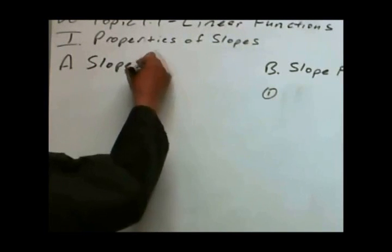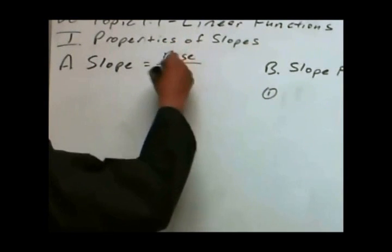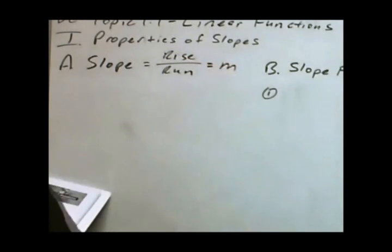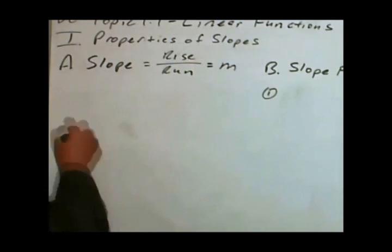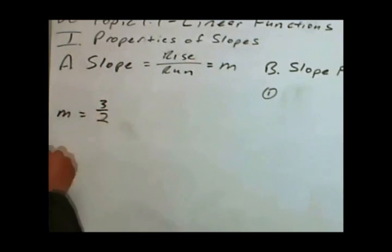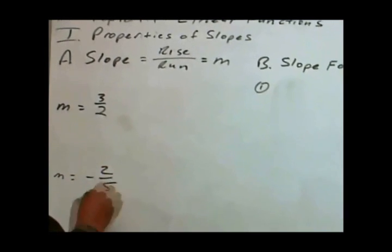A slope describes the direction of a line by telling you how far it rises versus how far it runs. The symbol we use for slope is the letter M. Let's look at three examples of slope: three-halves, negative two-fifths, and a slope of two.